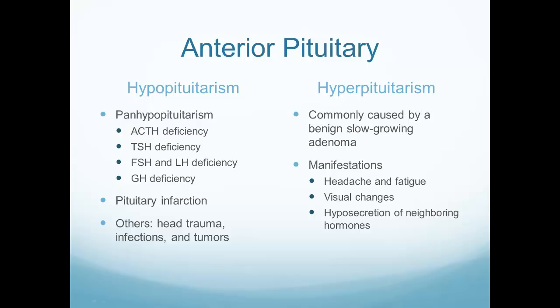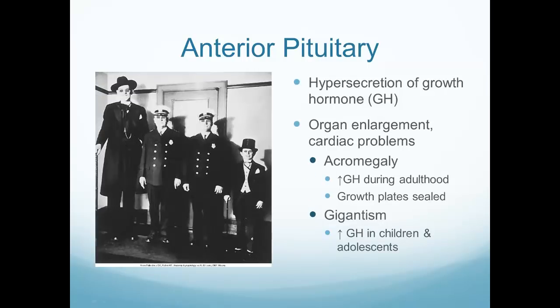Looking at anterior pituitary problems: hypopituitarism means decreased secretion of all hormones. Causes include pituitary infarction from decreased blood flow to the brain, head trauma, infections, or tumors. Hyperpituitarism is when too many hormones are secreted into the bloodstream, often resulting from a slow-growing tumor in the pituitary. Both conditions can cause significant problems for the patient.